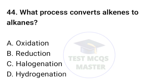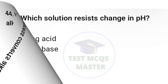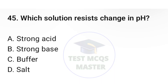Question number forty-four: what process converts alkenes to alkanes? The correct option is D, hydrogenation. Question number forty-five: which solution resists change in pH? The correct option is C, buffer.